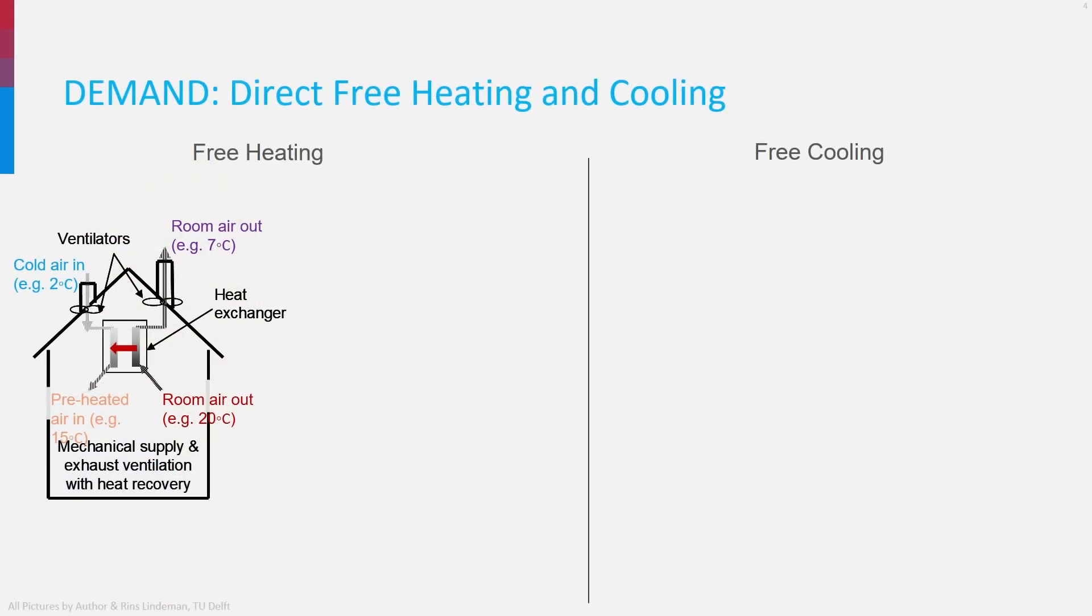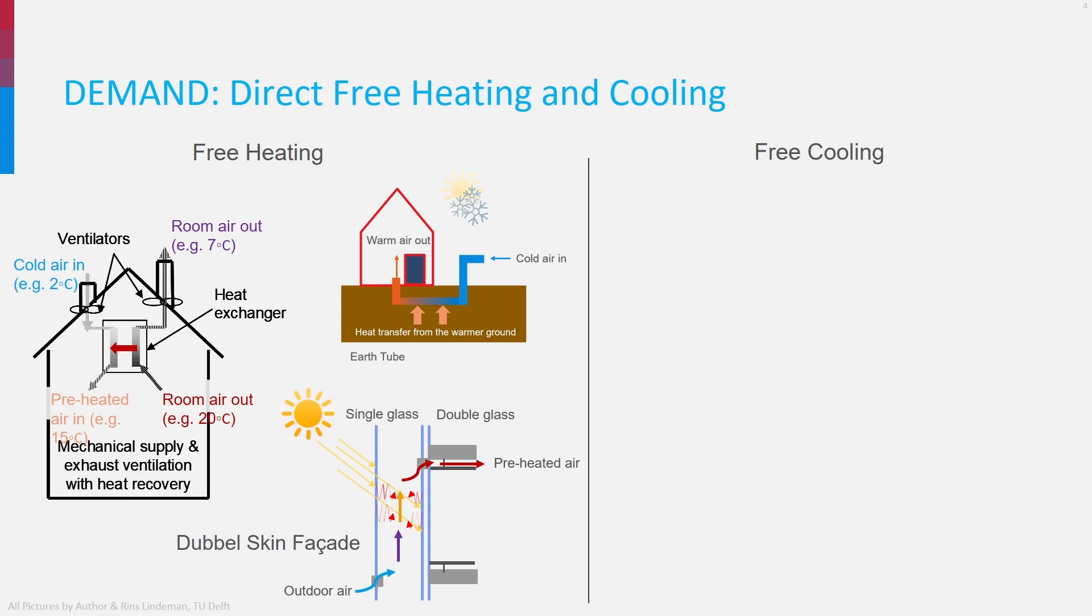When we discussed space heating demand in another lecture, we saw the importance of heat recovery ventilation. But there is more possible to reduce high heating and cooling peaks. For instance, cold outdoor ventilation air can be first preheated in an earth tube, taking heat from the ground, which is in winter always warmer than air. Another way of preheating air can be with so-called double-skinned facades, in which air is circulated in cavities and indirectly heated by solar radiation during sunny winters.